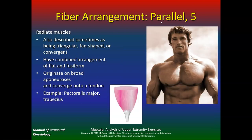Still parallel — radiate muscles are also described as triangular, fan-shaped, or convergent. They have a combined arrangement of the flat and fusiform, originating on a broad aponeurosis and converging onto one tendon. Examples are the trapezius and the pectoralis major.